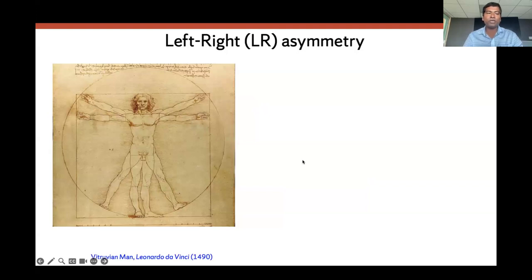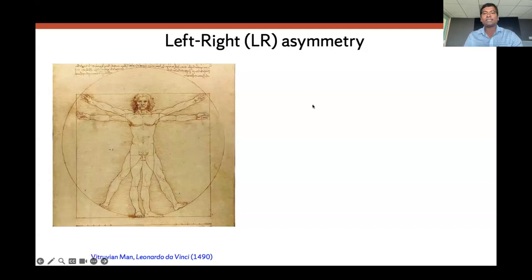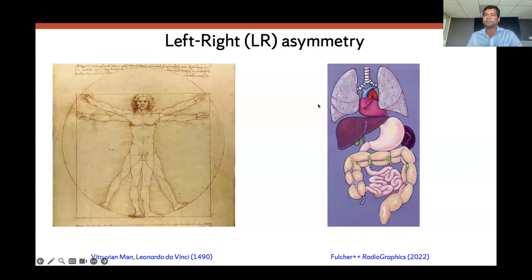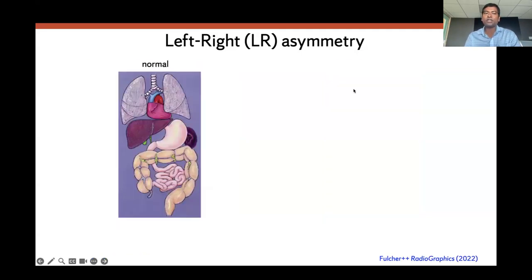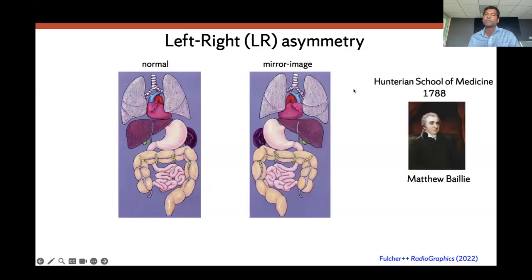If you look at the human body, what comes to mind is always symmetric — we have two eyes, two legs, two hands. But if you look at the interior part of the body, you would see that there is asymmetry: we have only one heart, and it is on the left side of the body; one liver, which is on the right side. This is normal positioning of the organs. But you can have a scenario where you have the mirror image, with the heart on the right side and the liver on the left side of the body. This patterning is called left-right patterning.